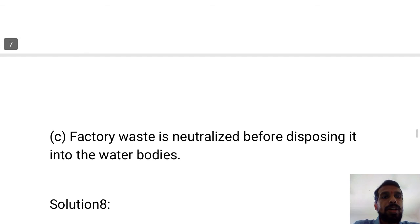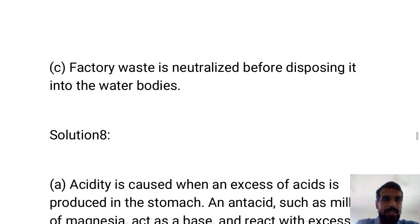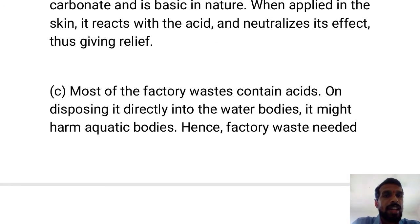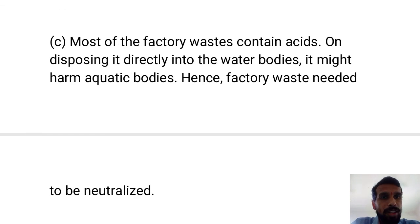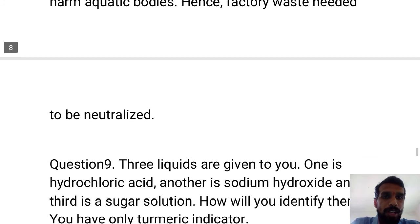Part C: Factory waste is neutralized before disposing it into water bodies. Most factory waste contains acid. If disposed directly into water bodies, it will harm living organisms such as fish. So the waste must be neutralized first.